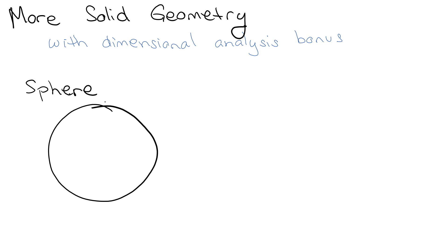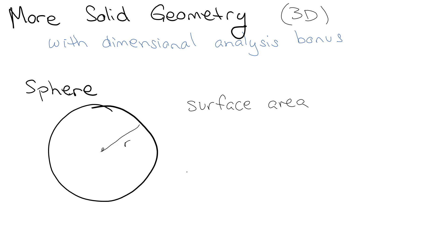So pretend this is a sphere and it has a radius of R. Now, when we were talking about two-dimensional things, we talked about linear feet and then area. With 3D figures, you have two different measurements as well. You have something called surface area and then something called volume. Surface area is the idea of painting — painting the whole thing.